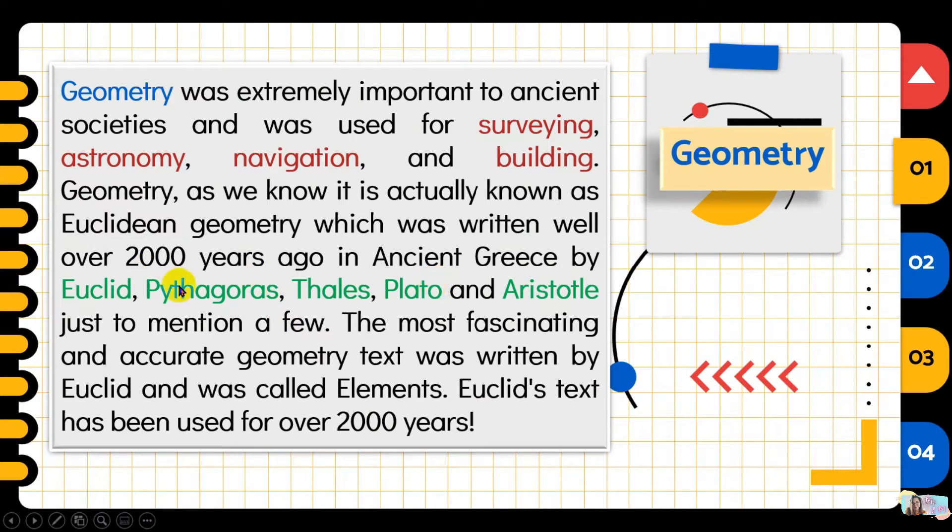Ancient Greece 2,000 years ago already had geometry with the help of famous people like Euclid, Pythagoras, Thales, Plato, and Aristotle who contributed to what geometry is now. The most fascinating and accurate geometry text was written by Euclid and was called Elements. Euclid's text has been used for over 2,000 years. Euclid summarized the discoveries of famous people back then.